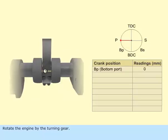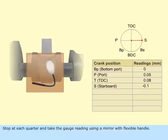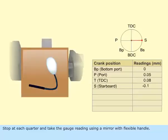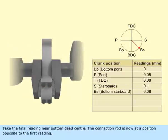Rotate the engine by the turning gear. Stop at each quarter and take the gauge reading using a mirror with flexible handle. Take the final reading near the bottom dead center.